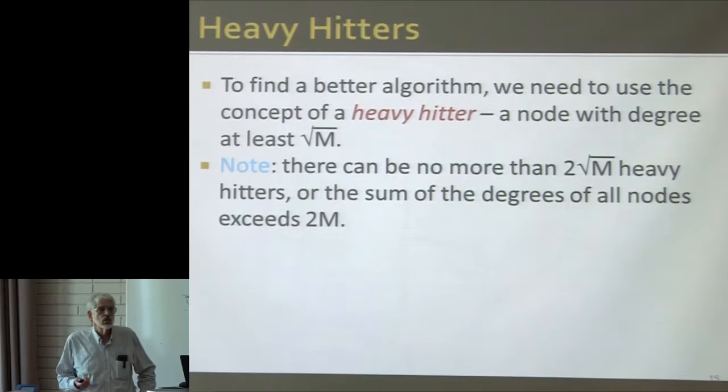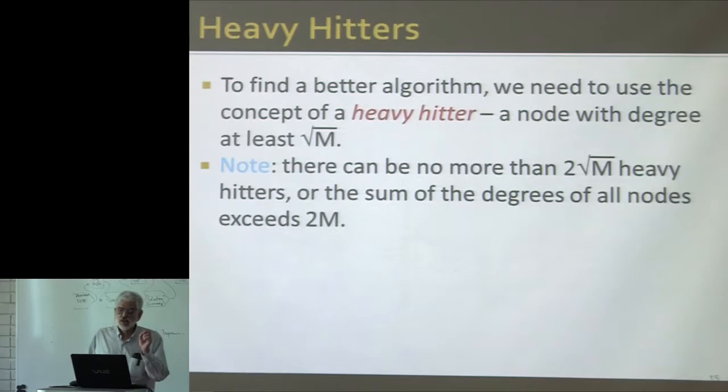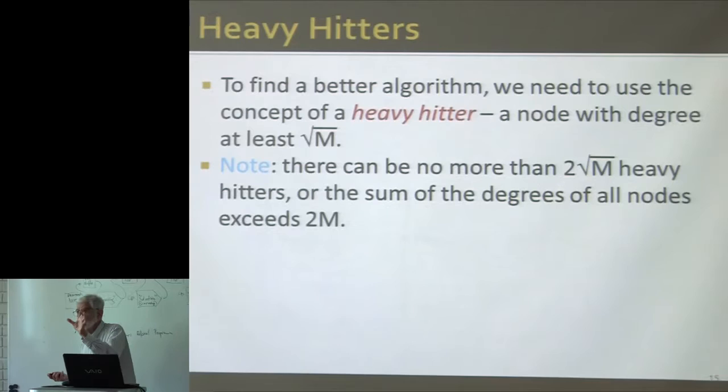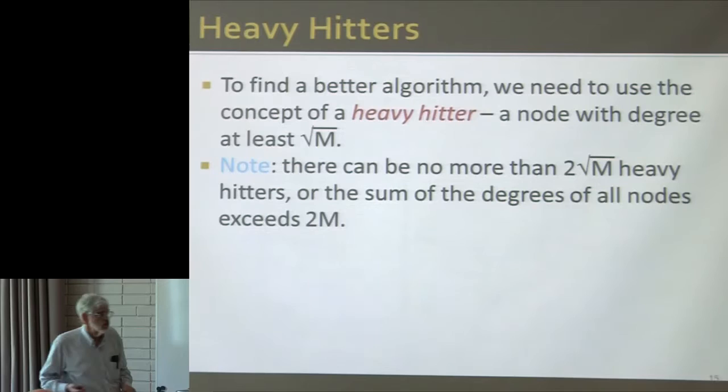The key observation is: if I've defined heavy hitter that way, there can't be more than two times the square root of m heavy hitters. Because each heavy hitter has degree at least square root of m, so the total degrees of all heavy hitters sum to at most 2m — which is the total degree of all nodes in the graph, since each of the m edges contributes one to the degree of each of its two endpoints. So the number of heavy hitters has to be relatively small.